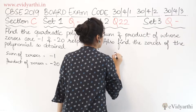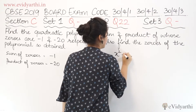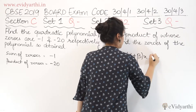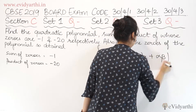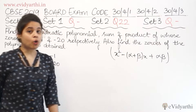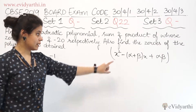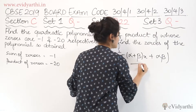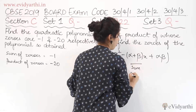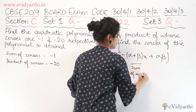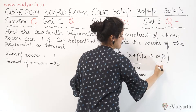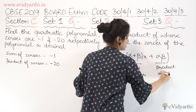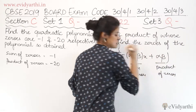If you don't remember the format, you should remember this: x squared minus (alpha plus beta) x plus alpha beta. This is the format in which our quadratic equation is written. Here, (alpha plus beta) is the sum of zeros, and alpha beta is the product of zeros.